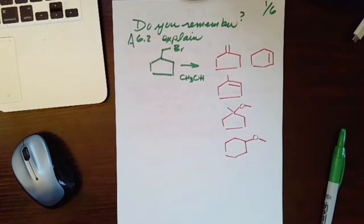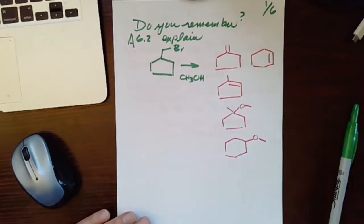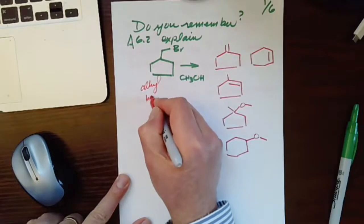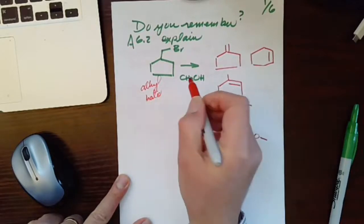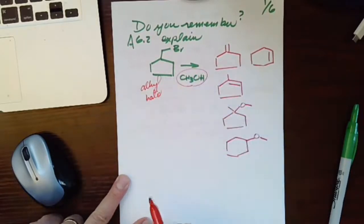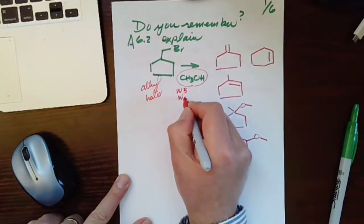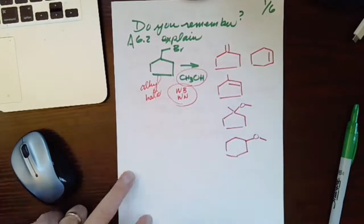So the first one I'd like to remind you is this one. If you remember, we worked on this in 6.2. We said what we have in alkyl halides—so this is an alkyl halide. You have a weak, very weak base or a weak nucleophile.